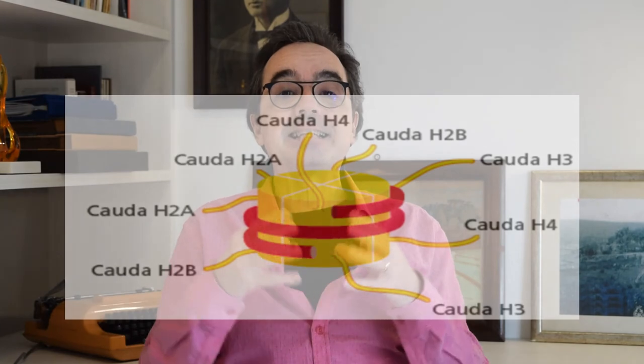Vamos voltar agora para os nossos já conhecidos nucleossomos. Nós vimos que as histonas que compõem o cerne de um nucleossomo, em torno do qual a dupla hélice de DNA se enrola, são de quatro tipos, sendo duas cópias de cada tipo, o que faz um octâmero. As partes mais estruturadas, chamadas de regiões de enovelamento, são voltadas para dentro, enquanto as extremidades N-terminal ficam estendidas, flexíveis, sem uma estrutura definida, voltadas para fora, como se fossem oito caudas. Essas caudas têm aminoácidos altamente suscetíveis a modificações covalentes, como metilações, acetilações e fosforilações.